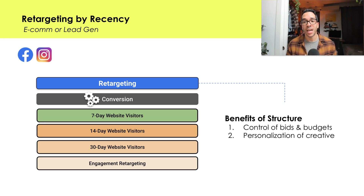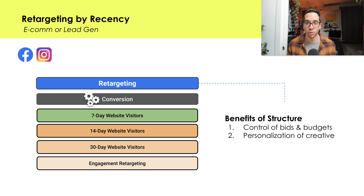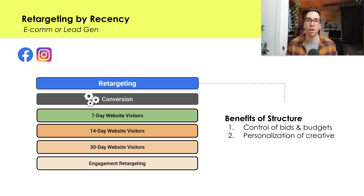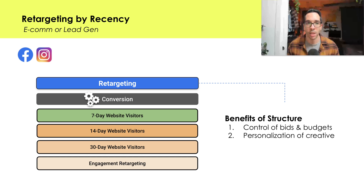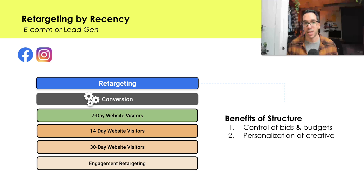Structure allows you actual control over your bids and your budgets, meaning that you can maximize what you're willing to pay for one audience and minimize what you're willing to pay for another audience. This example can be utilized for both e-com advertisers and lead generation advertisers, and it's quite a standard one.